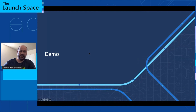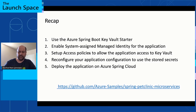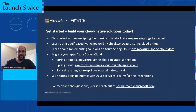To recap: in order to get Azure Key Vault secrets into your Spring Boot application, you need to opt into the Azure starter, enable a system managed identity for the application, set up access policies, reconfigure your application to use the stored secrets, and deploy on Azure Spring Cloud with the new profile. The entire example including CI/CD is available at the link on screen. For feedback and questions, email us at springteam@microsoft.com.